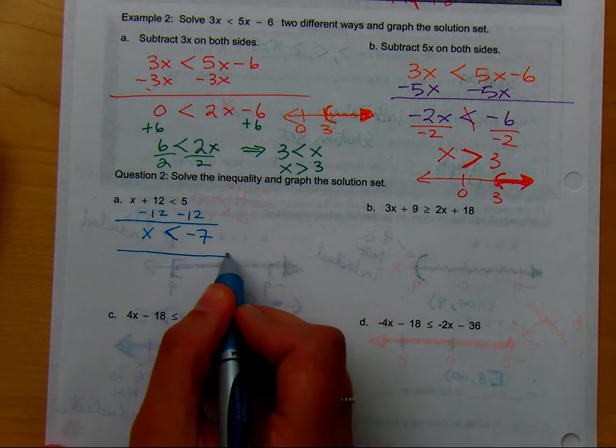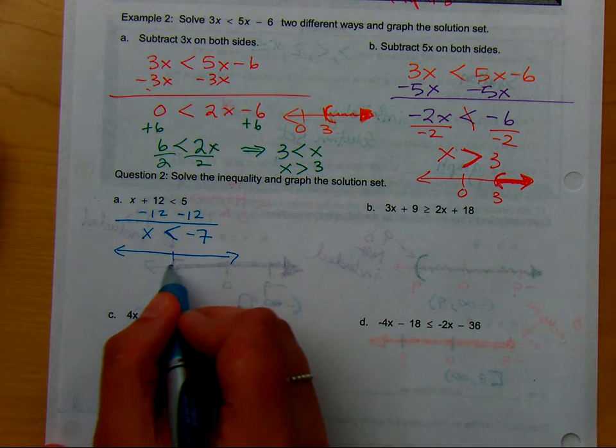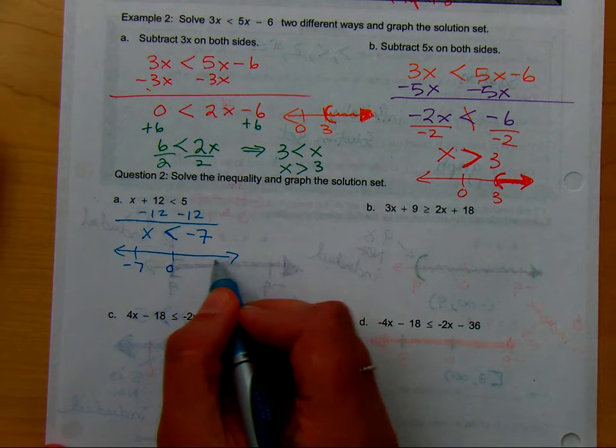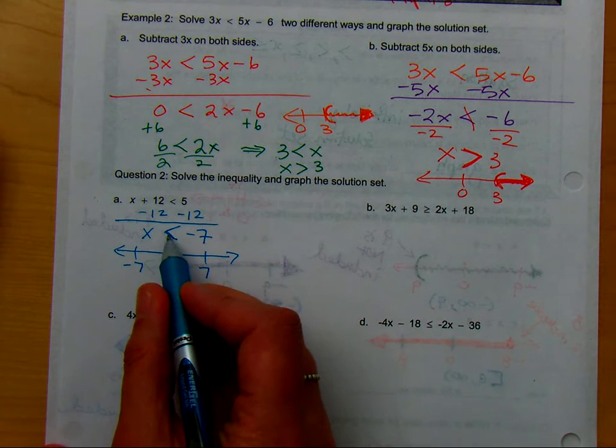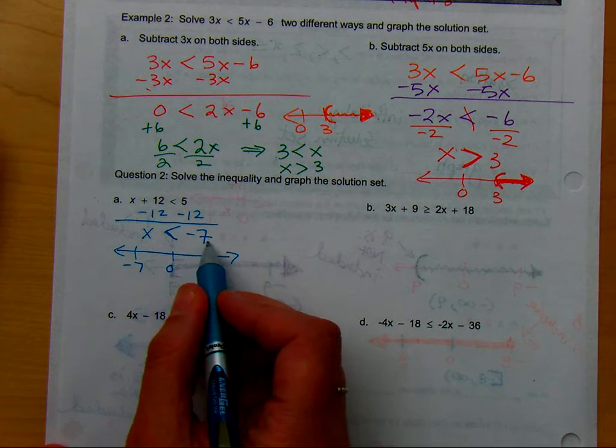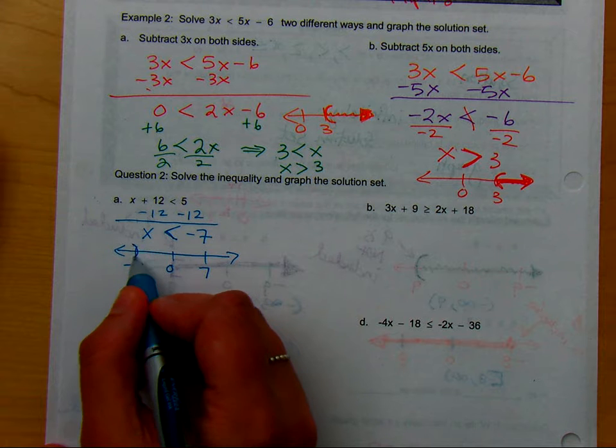Now, I want to graph this on the number line. Here's 0, over here is negative 7, over here is positive 7. x is less than negative 7. So, that's going to go...